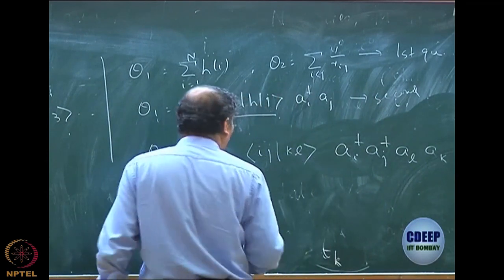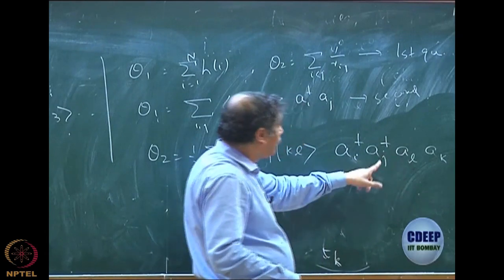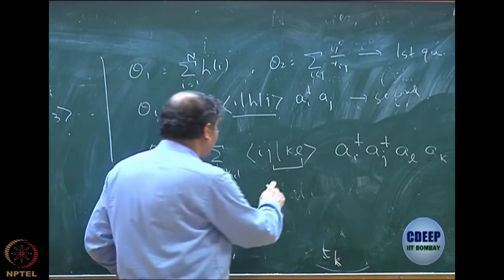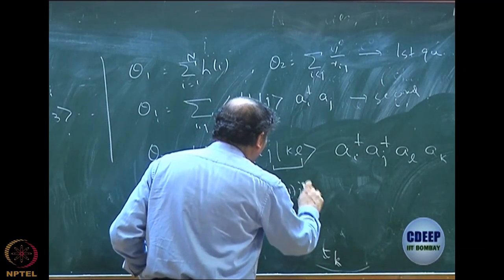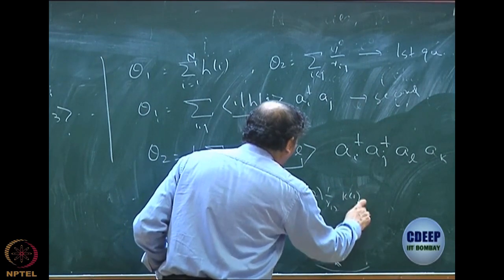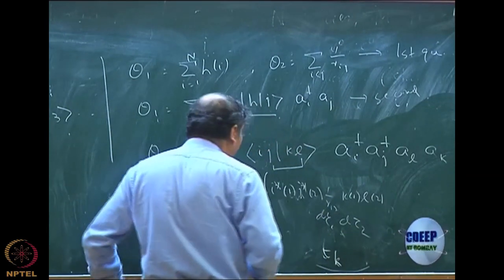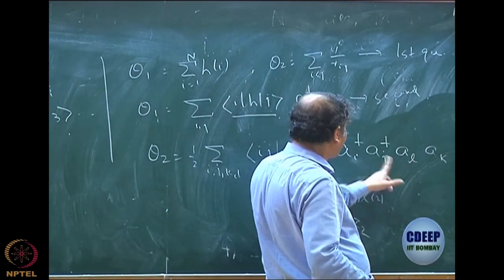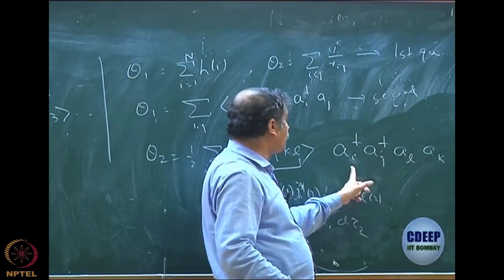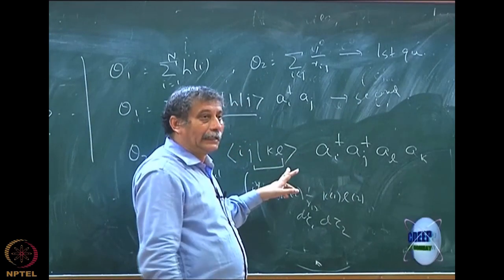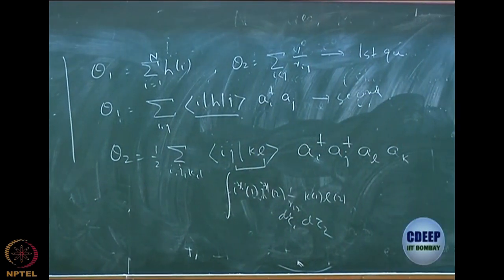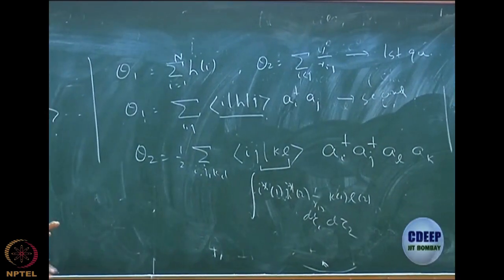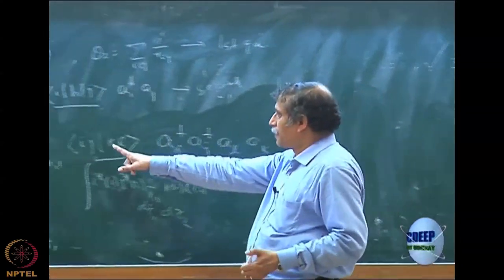The specific operator order is ai dagger aj dagger al ak — that is the specific order. First k is annihilated, then l is annihilated; in the place of l, j is created, and in the place of k, i is created. This is direct notation, so this means i*(1) j*(2) [1/r12] k(1) l(2). Please do not write ai dagger aj dagger ak al — there has to be a switch: al ak. In second quantized form of theta2, these are all basis; exchange is not explicitly there. Second quantized notation has only the 1/r12 — we will show how the exchange term comes.